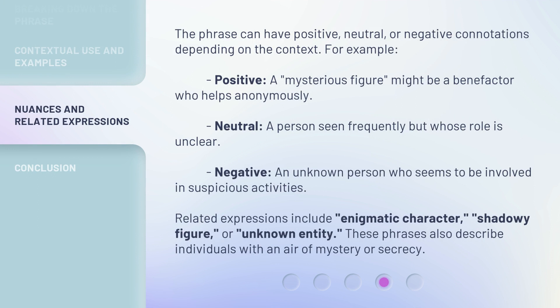The phrase can have positive, neutral, or negative connotations depending on the context. For example, positive: a mysterious figure might be a benefactor who helps anonymously. Neutral: a person seen frequently but whose role is unclear. Negative: an unknown person who seems to be involved in suspicious activities. Related expressions include 'enigmatic character,' 'shadowy figure,' or 'unknown entity.' These phrases also describe individuals with an air of mystery or secrecy.